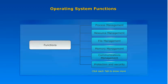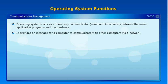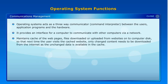Communications Management: The operating system acts as a three-way communicator and command interpreter between the users, application programs, and the hardware. It provides an interface for a computer to communicate with other computers via a network. It maintains a cache of web pages and files downloaded or uploaded from websites onto the computer disk, so that next time the user visits the cached website, only changed content needs to be downloaded from the internet, as the unchanged data is available in the cache.